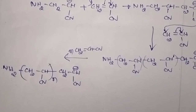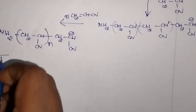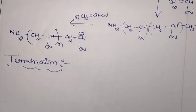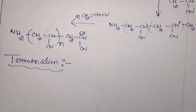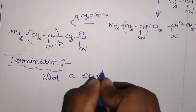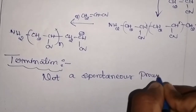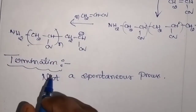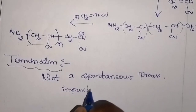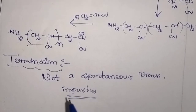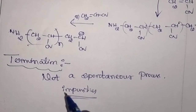The next and final step is the termination step. One thing you need to understand is that in anionic polymerization, termination is not a spontaneous process. So if you want to terminate this growing polymer chain, you need to add some impurities. If impurities are not added, termination does not occur in anionic polymerization — that is something you need to remember.